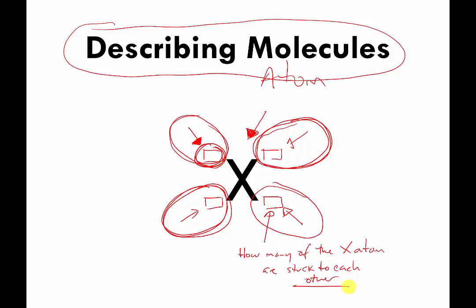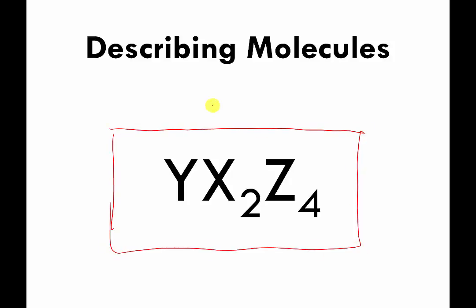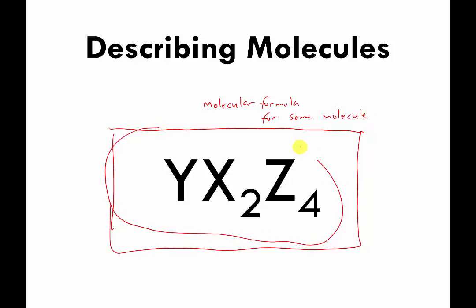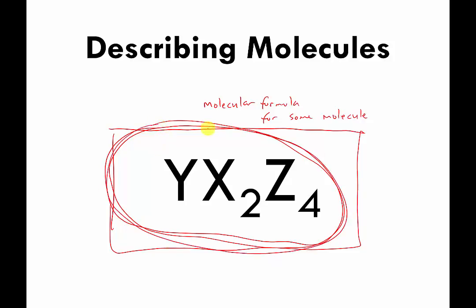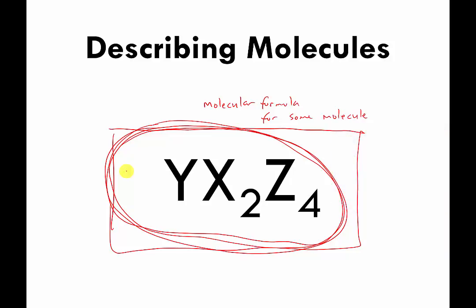As an example, look at this picture — this is the molecular formula for some molecule. It's supposed to tell you what the different types of atoms are in this molecule and how many of each type are stuck to each other. These are pretend names, but I want you to pause the video and tell me what types of atoms there are and how many of each type. You can pause right now.